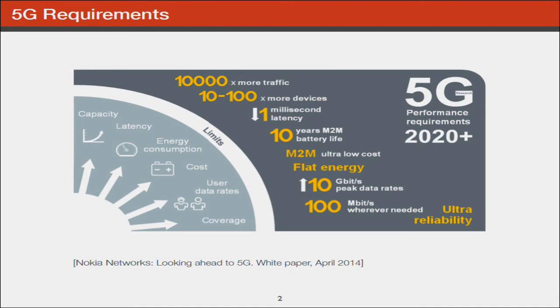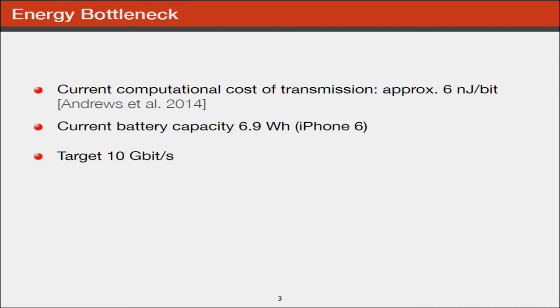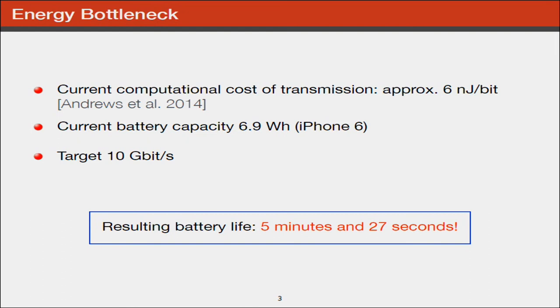Let's look at the energy bottleneck. The current computational cost of transmission is approximately 6 nanojoules per bit. If I look at my iPhone 6, the battery capacity is 6.9 watt hours. With a target of 10 gigabits per second, how long can we browse the internet? It turns out we can browse for 5 minutes and 27 seconds. Clearly everybody would complain if your cell phone dies after this time. The battery life will increase up to 2020, but we also have to look at more low complexity communication strategies. Error correction has to take its share to become more low complexity.